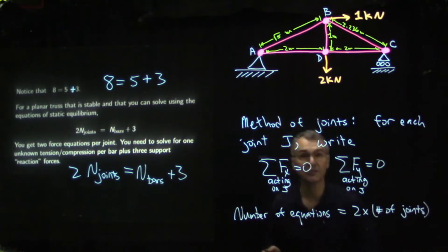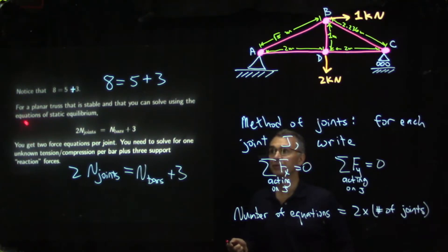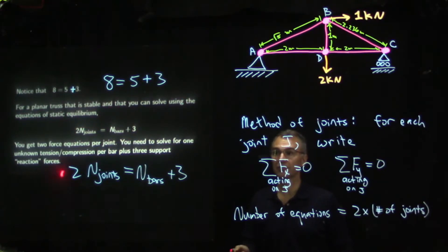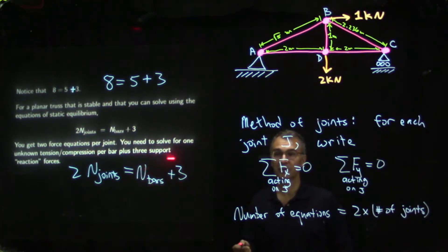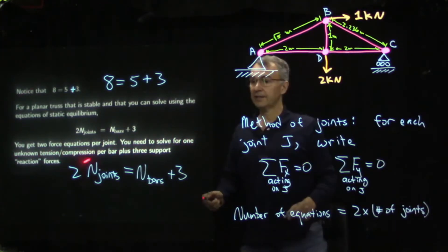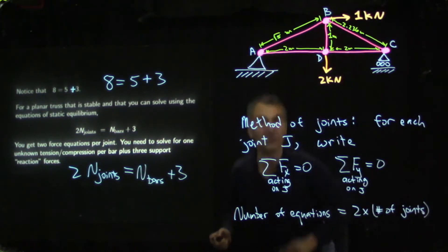For a planar truss that is stable and solvable using static equilibrium equations, a necessary condition is: two times the number of joints equals the number of bars plus three. If this is not true, you cannot solve the truss using the methods of static equilibrium in a plane. If it is true, you probably can — but not necessarily. Every solvable truss has this property: two times the number of joints equals the number of bars plus three.